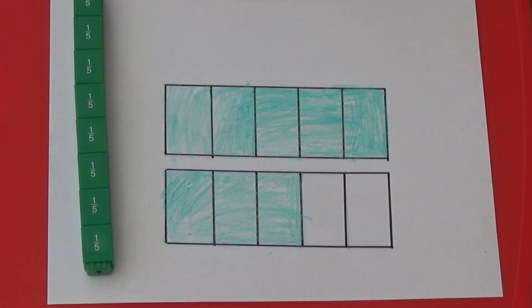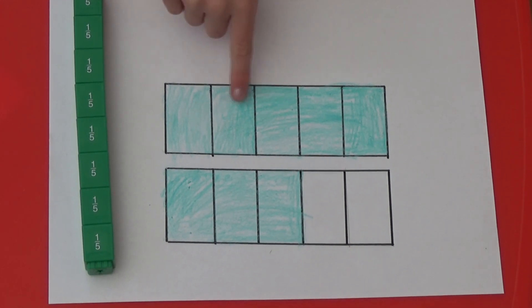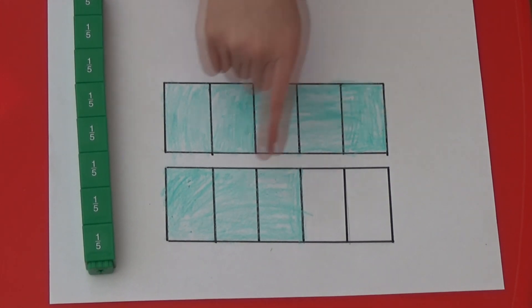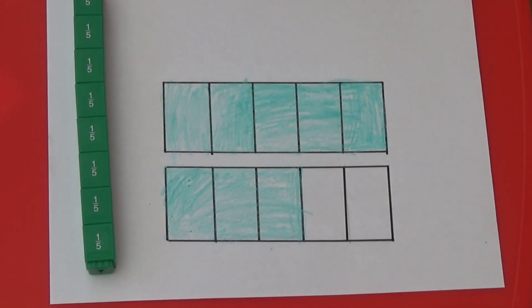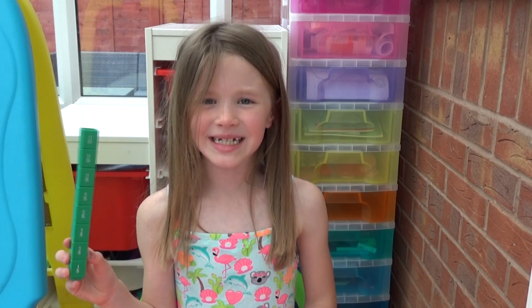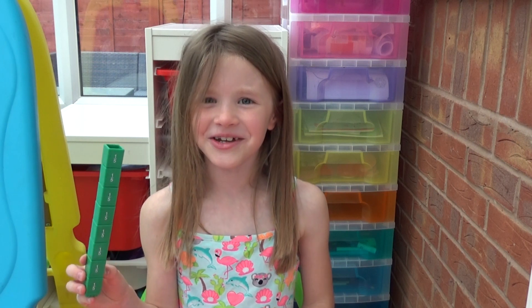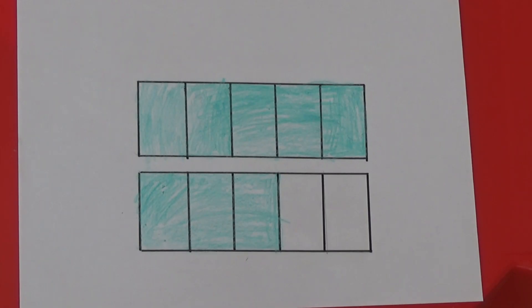And if we count the fifths, we can see that they are 1, 2, 3, 4, 5, 6, 7, 8 shaded in. There are 8 parts shaded in so I have taken 8 fifth cubes, which means the picture is showing 8 fifths altogether.